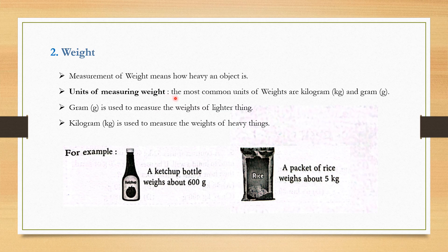Measurement of weight means how heavy an object is. Units of measuring weight: The most common units of weight are kilogram and gram. Gram is used to measure the weight of lighter things. Kilogram is used to measure the weight of heavy things.